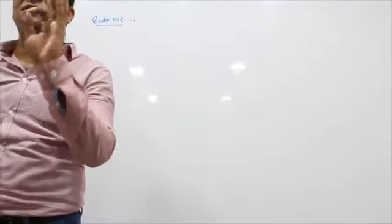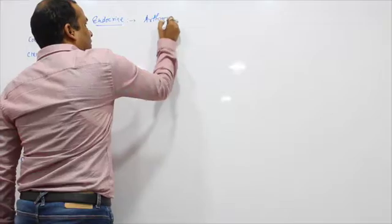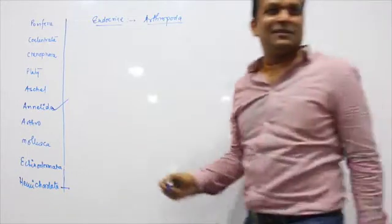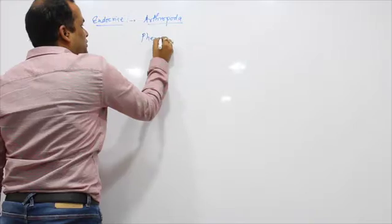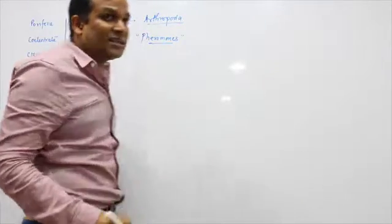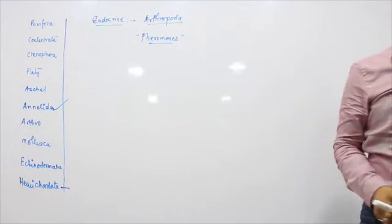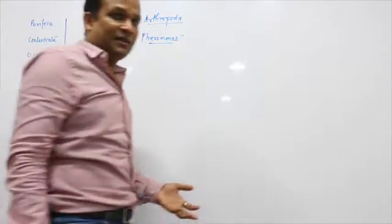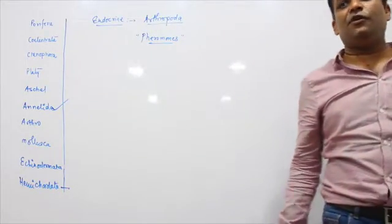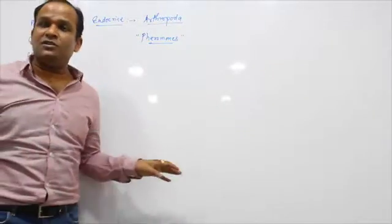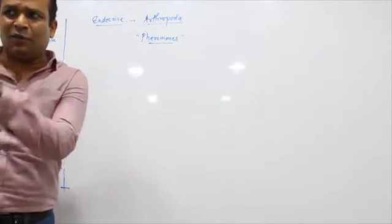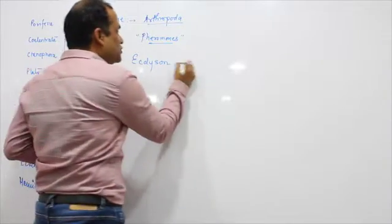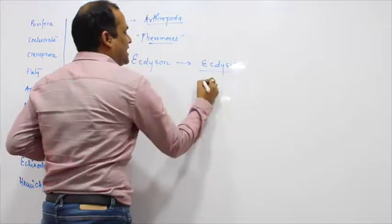The endocrine system starts with Arthropoda. The hormones are called pheromones. Pheromones are generally responsible for mating in arthropods — females secrete pheromones to attract males. Another hormone is ecdysone, used for the process called ecdysis.